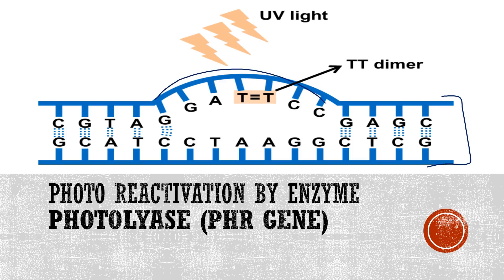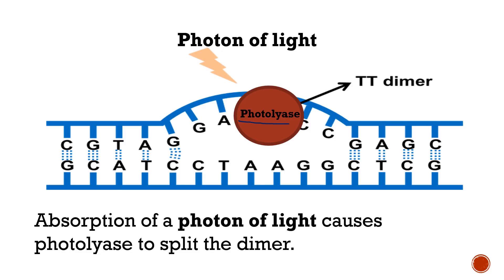This leads to the formation of the thymine-thymine dimer, which causes a bulge in the DNA molecule. Photo reactivation is carried out by the enzyme photolyase, which is encoded by the PHR gene, and can repair this type of damage. The enzyme photolyase searches for the bulge in the double helix, binds to the TT dimers, and on absorption of a photon of light, causes the TT dimer to split.